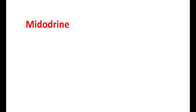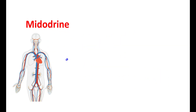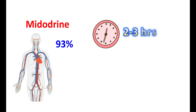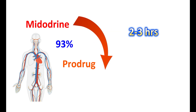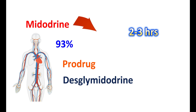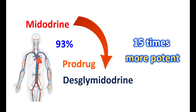Midodrine has high bioavailability — around 93% of the medication is absorbed into the body — with onset of action within 45 to 90 minutes. However, it has a short duration of action, working up to 2 to 3 hours. Midodrine is extensively metabolized in the liver; it is a prodrug converted into desglymidodrine, an active metabolite responsible for its vasoconstrictor effects, which is 15 times more potent than Midodrine itself.